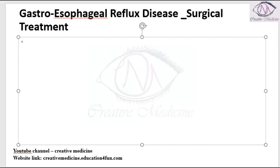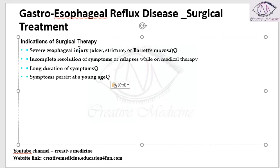First we will see the indications of surgical therapy. Surgical therapy is indicated if the patient has severe esophageal injury like stricture or ulcer, or if the patient has Barrett's esophagus, or if the patient has incomplete resolution of symptoms, or if the patient has relapses of symptoms even when on medical therapy.